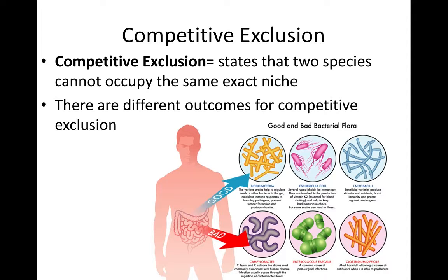Competitive exclusion. This rule states that two species cannot occupy the same exact niche. There are different outcomes for competitive exclusion, but basically two organisms cannot have the same exact role.